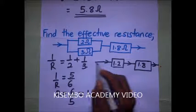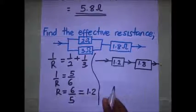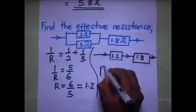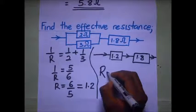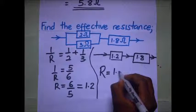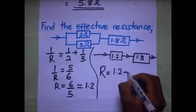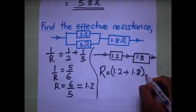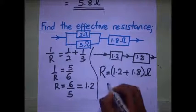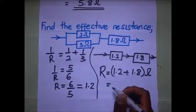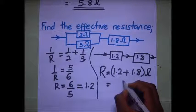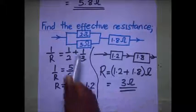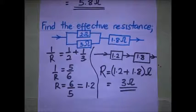So we continue with our total resistance being 1.2 plus 1.8 ohms. Our final answer is 3 ohms. So the effective resistance of this entire combination is 3 ohms.